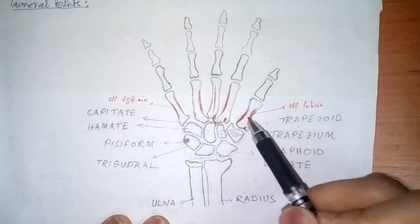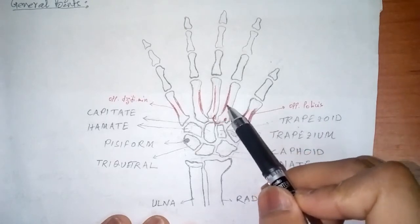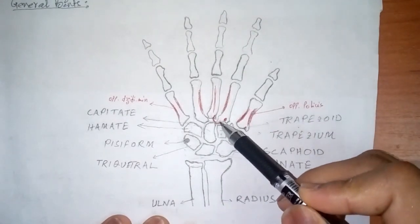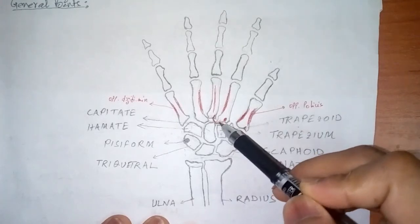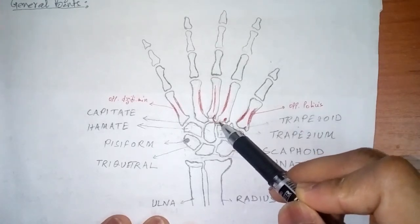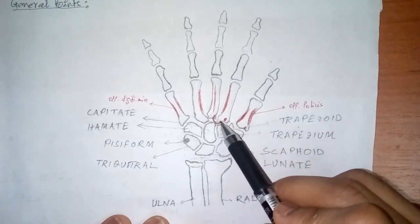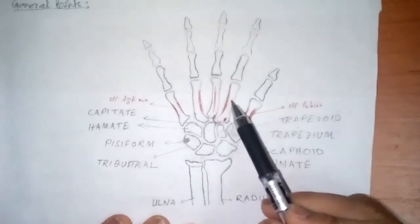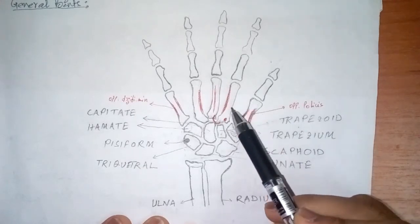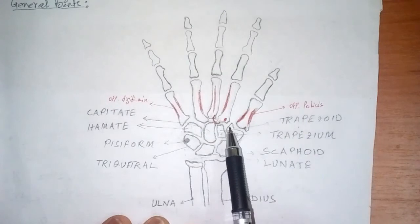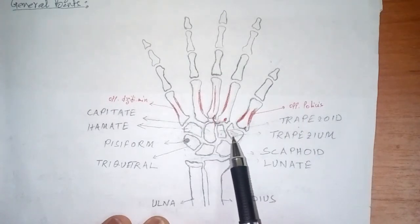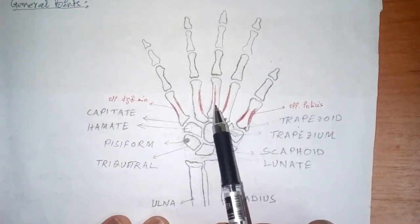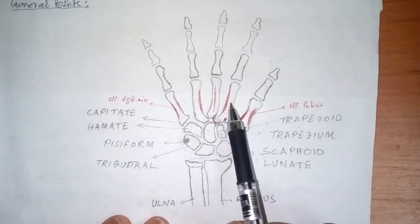The second palmar interosseous muscle is also attached here. The oblique head of the adductor pollicis is inserted on the palmar surface at the base and also arises from this area. As for articulation, the second metacarpal bone articulates with four bones: the trapezium, the trapezoid, the capitate, and the third metacarpal bone.